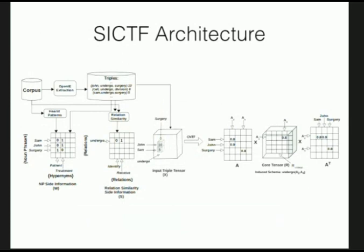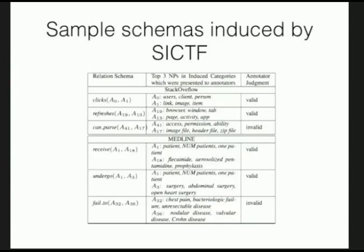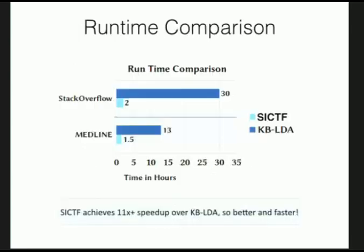Putting all constraints together gives the final model SIXTF, which outperforms the KBLDA baseline by a significant margin on both datasets. This is the overall architecture: starting from corpus, extracting triples, building the tensor and side information matrices, and jointly factorizing them. In addition to performance benefits, SIXTF gets about an 11x speedup in runtime compared to the topic-modeling baseline — not only doing better, but doing it faster.